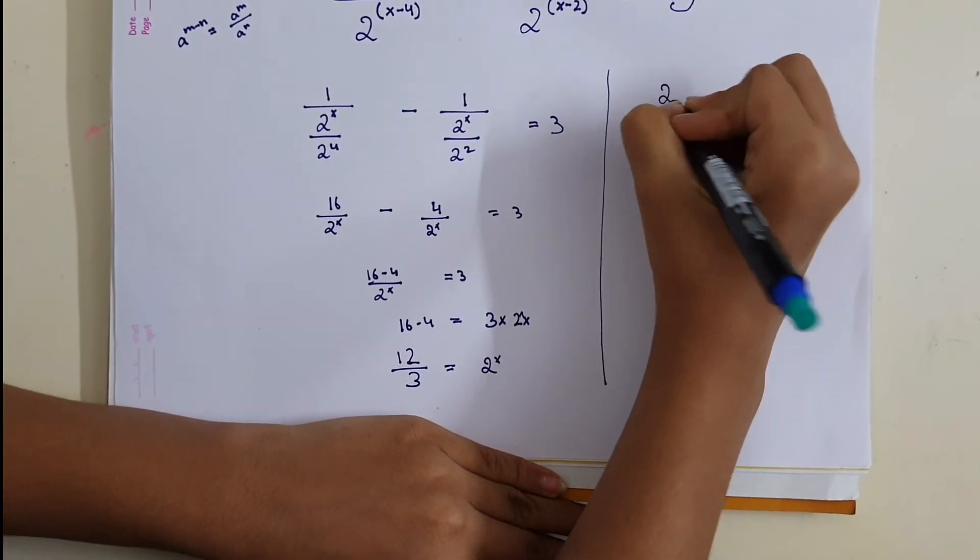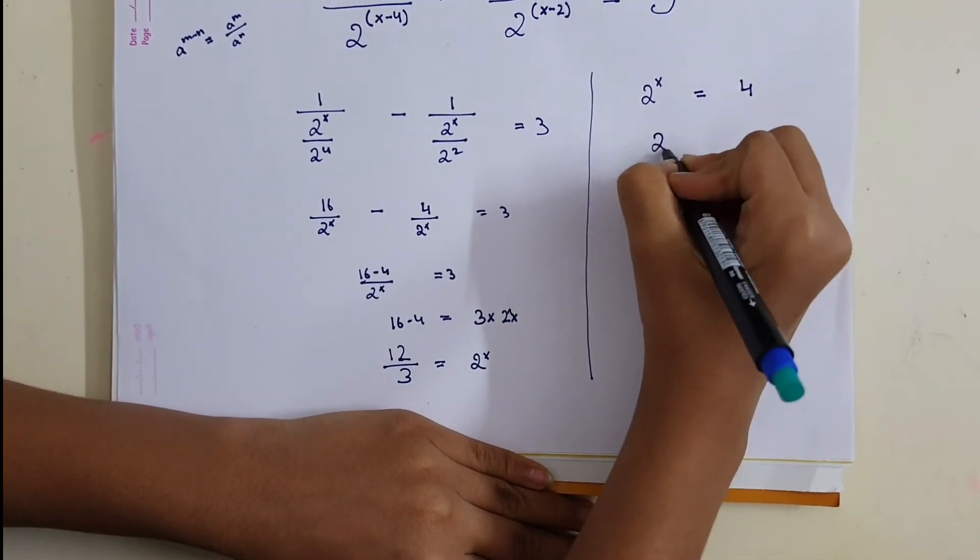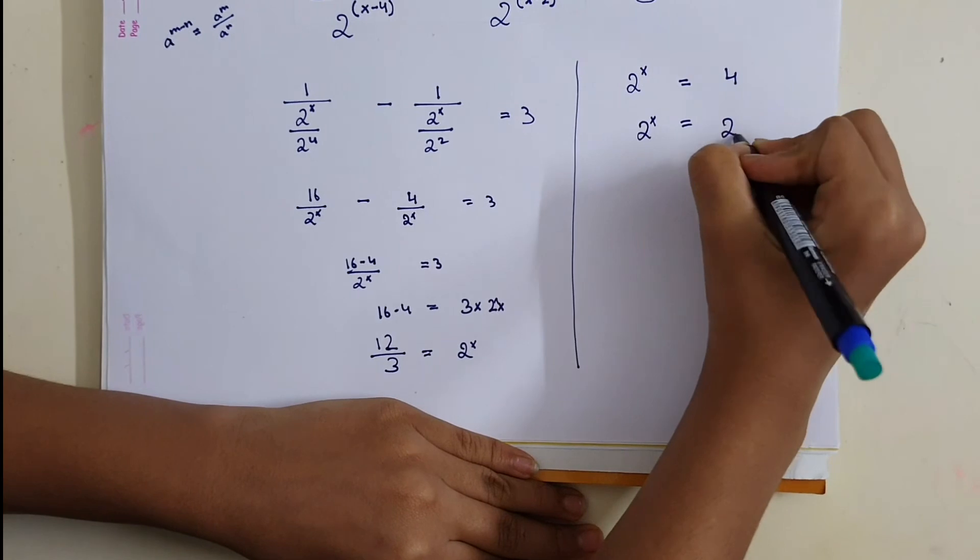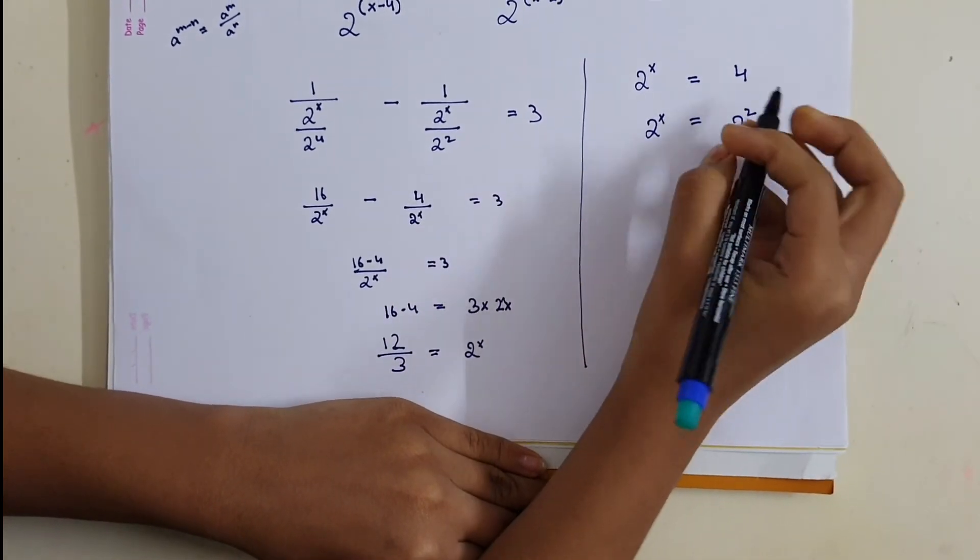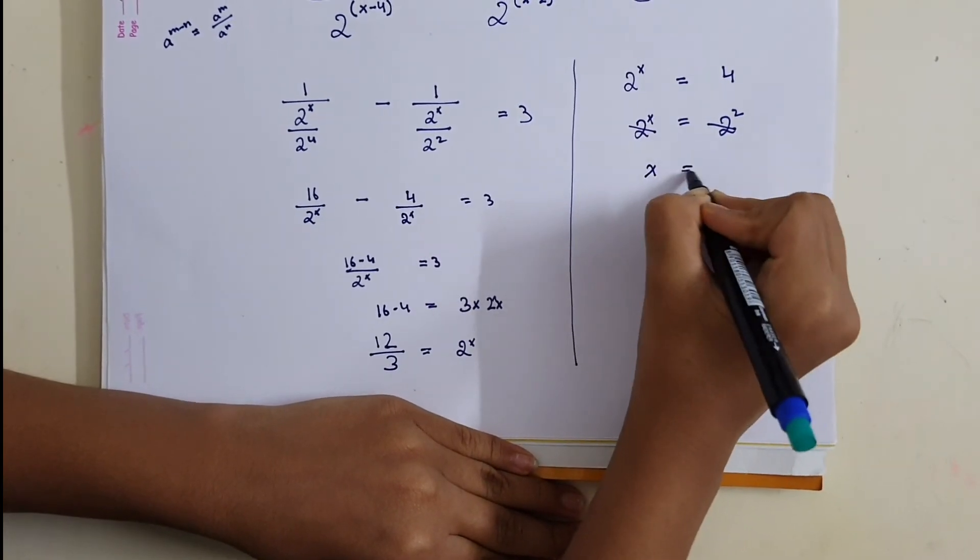So 2 raised to power x equals to 4 which can also be written as 2 raised to power 2. So now over here the bases are same. So x equals to 2.